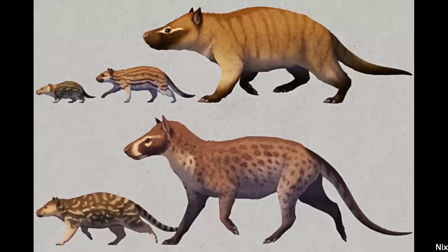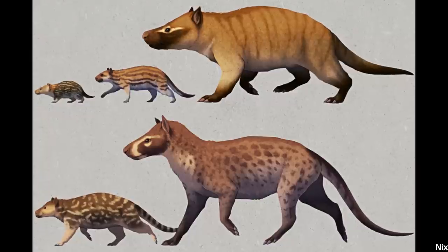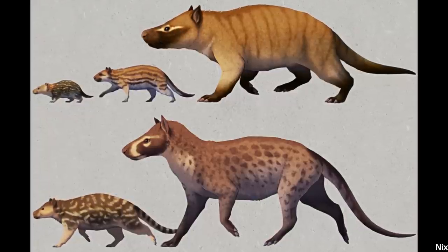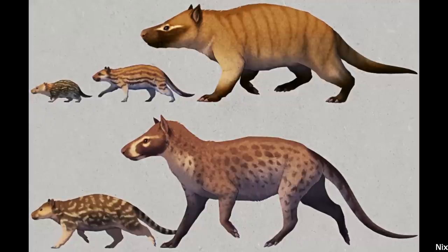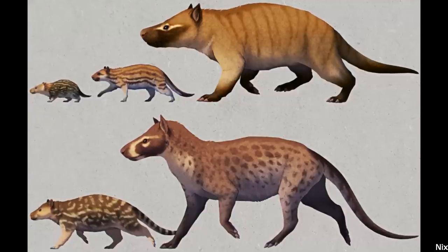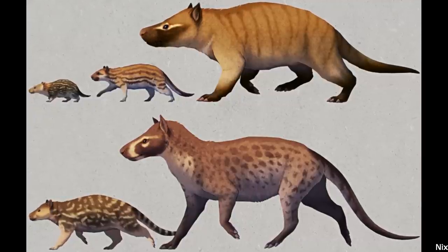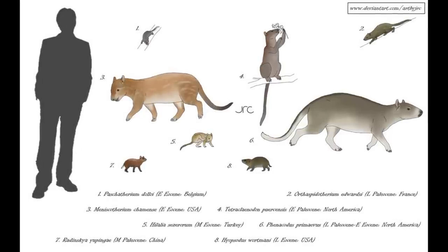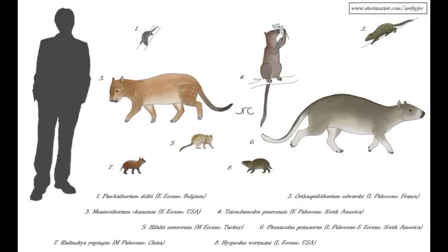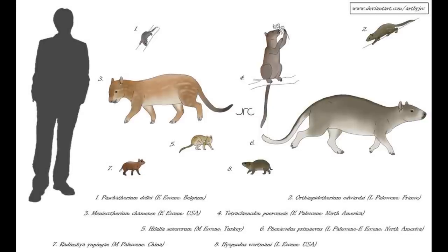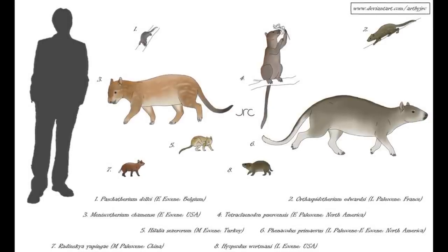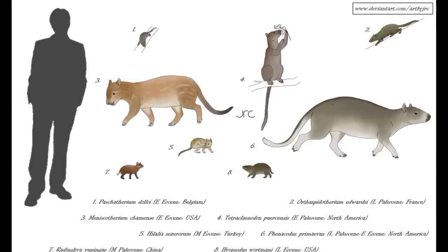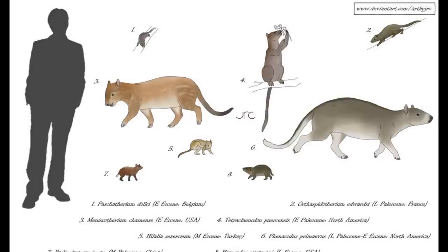However, later studies have shown this group to be a wastebasket taxon, and instead probably represents a hodgepodge of unrelated basal ungulates, with some well-known representatives including the Mesonychids, Arctocionids and Phenacodontids. Many of these animals do not closely resemble modern hoofed mammals in the slightest, if anything appearing more like carnivorans, and occupying a wide range of ecological niches, spanning from tiny rodent-like climbers to robust bear-like omnivores, and even wolf-like carnivores.